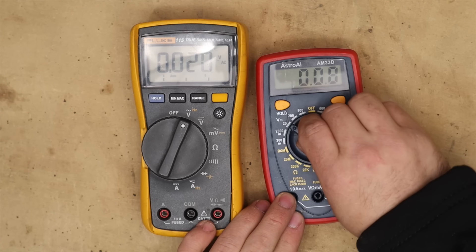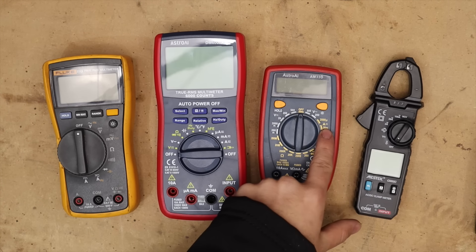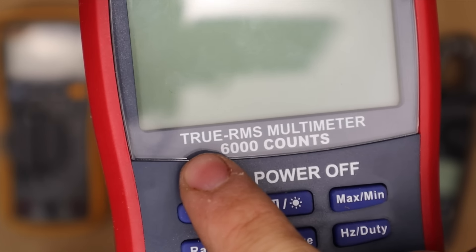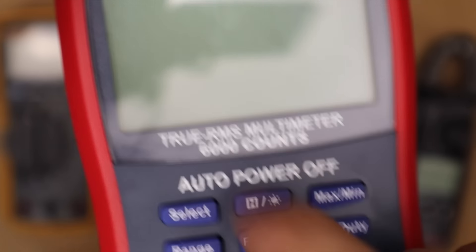And finally, how do you select a multimeter to buy? The first thing to consider is what features are you going to need that were mentioned. Another aspect is whether the meter is true RMS. This means root mean square.